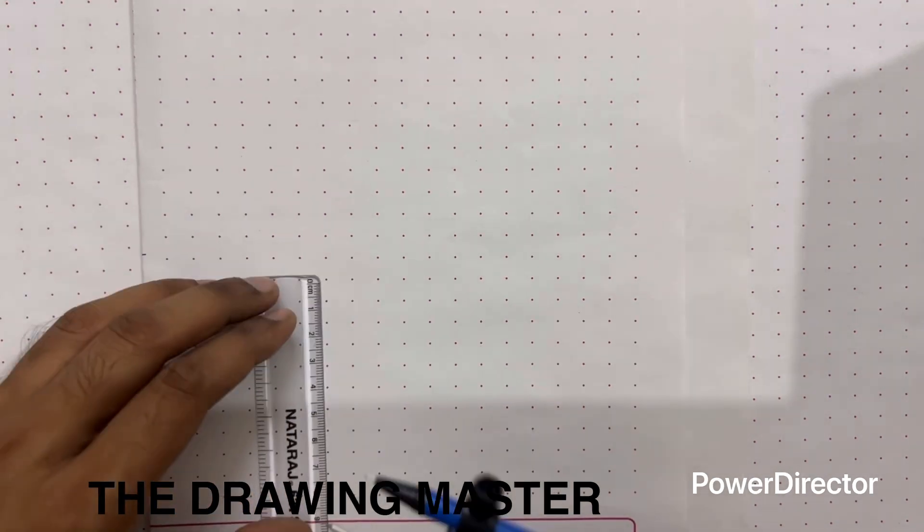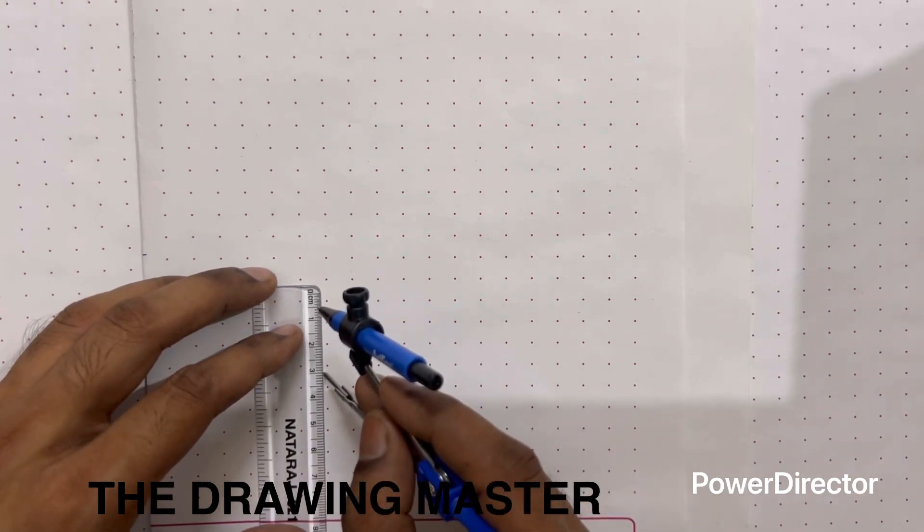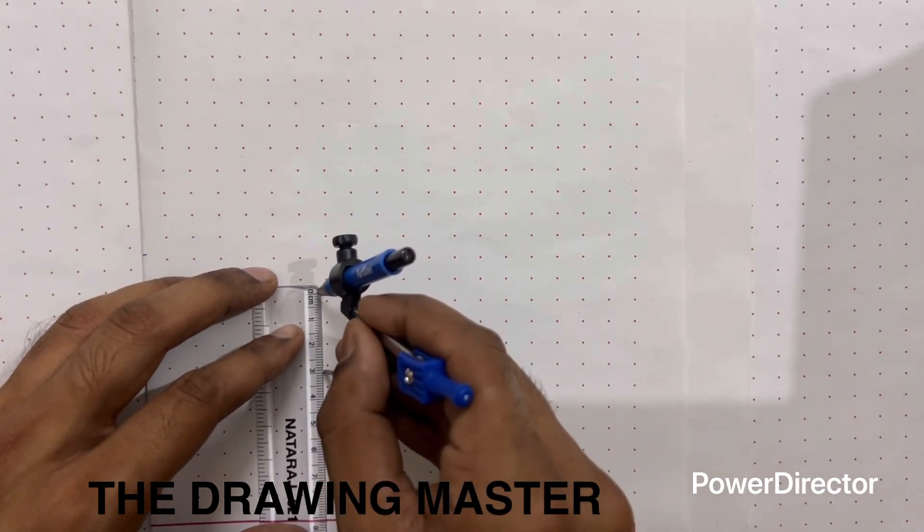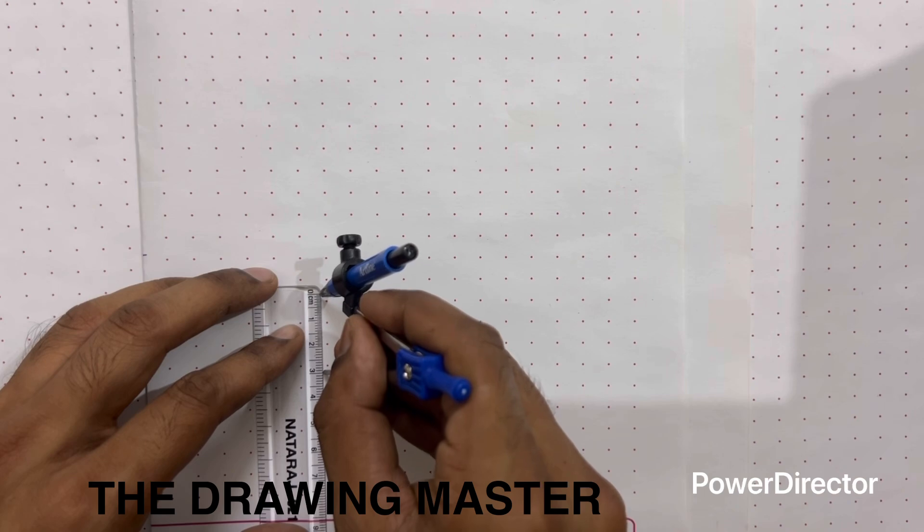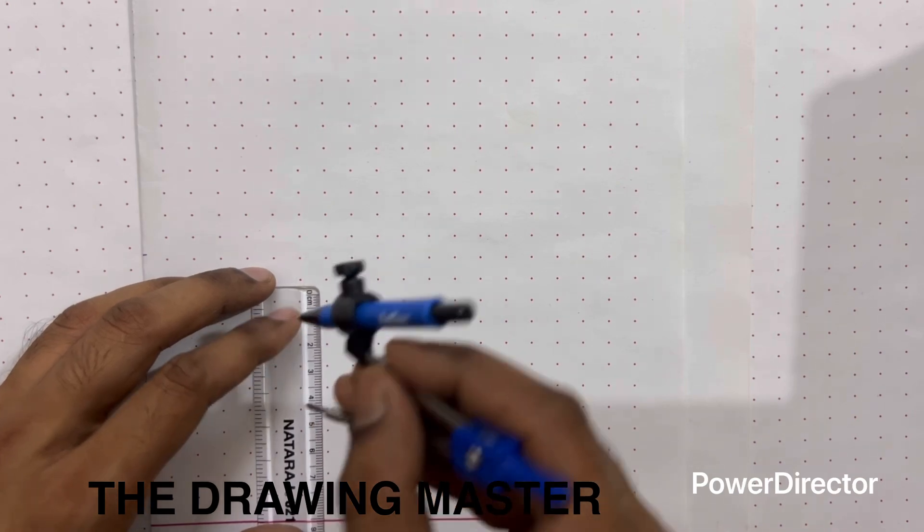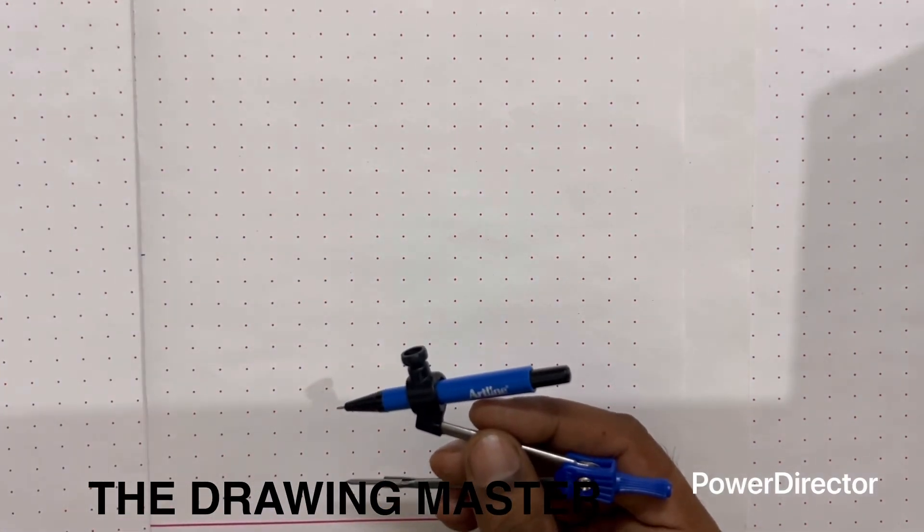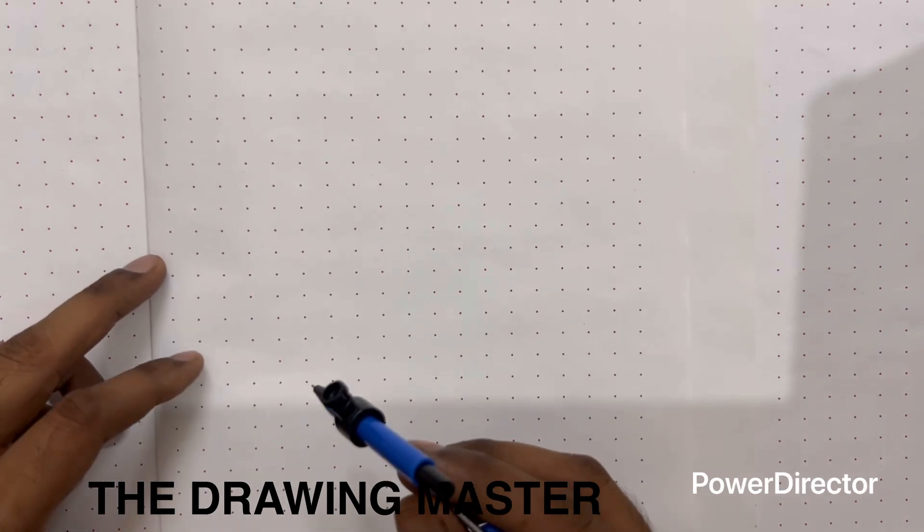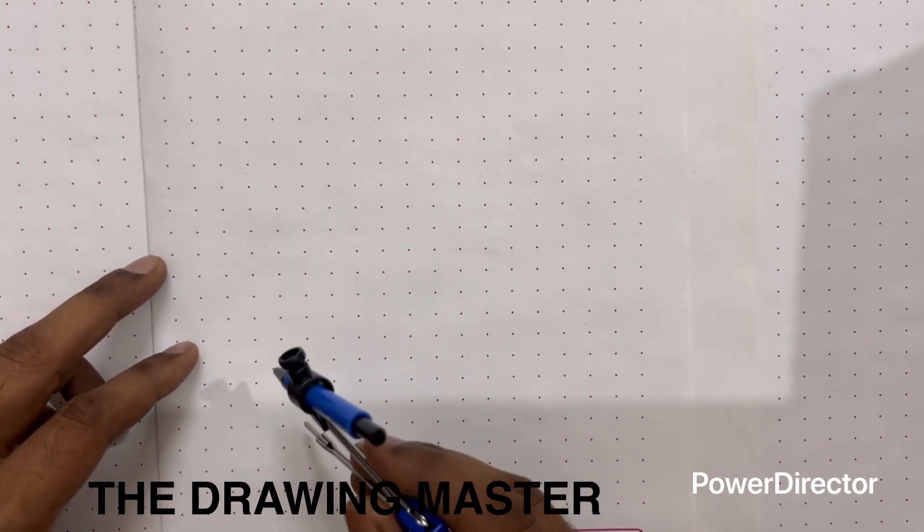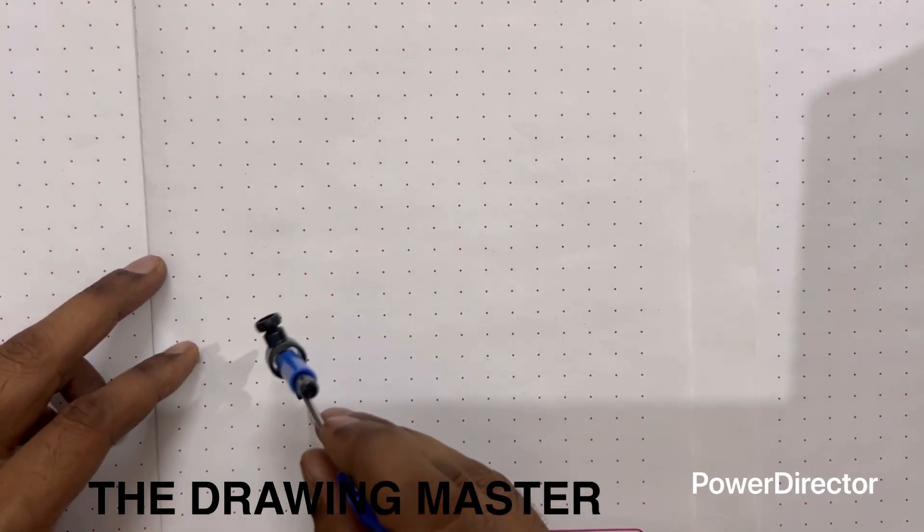The statement of this problem is available in the description box. We are going to develop the lateral surface of a hexagonal base pyramid. First we have to draw one hexagon here, so how to draw a hexagon with the help of compass we'll see it.